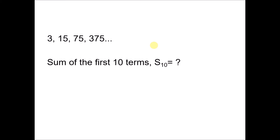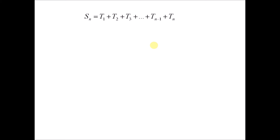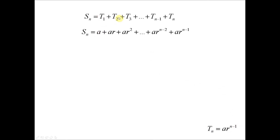Before we start, we need to learn how to derive the formula. Sn equals the first term plus the second term, adding up all the terms until the nth term. Using the formula from the previous video, where the nth term equals ar to the power of n minus 1, we can rewrite all terms t1, t2, t3 in this form. So t1 is a, t2 is ar to the power of 1, t3 is ar squared, and tn equals ar to the power of n minus 1. We label this as equation 1.